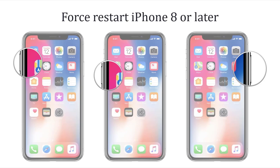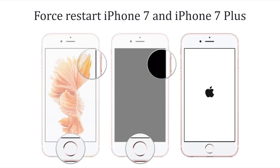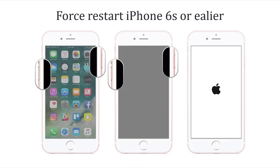Release the button when you see the Apple logo. For iPhone 7, hold the volume down button and the sleep button simultaneously. Release when you see the screen flash and the Apple logo shows up. For iPhone 6 or earlier devices, press and hold the sleep button and the home button at the same time. Keep holding the two buttons for about 14 seconds, then let go once the Apple logo appears.